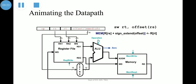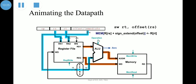Let us see the animation of the data path using the store word instruction. RN1 and RN2 in the register file get the fields from the instruction itself. The 16-bit offset value is extended to 32 bits and put as input to the ALU. The data contained in the register specified by the instruction is fed into the memory at the address calculated by the ALU. The ALU receives two inputs: the sign-extended offset field and the base register address. Both are added, and the data is saved at that resulting address.